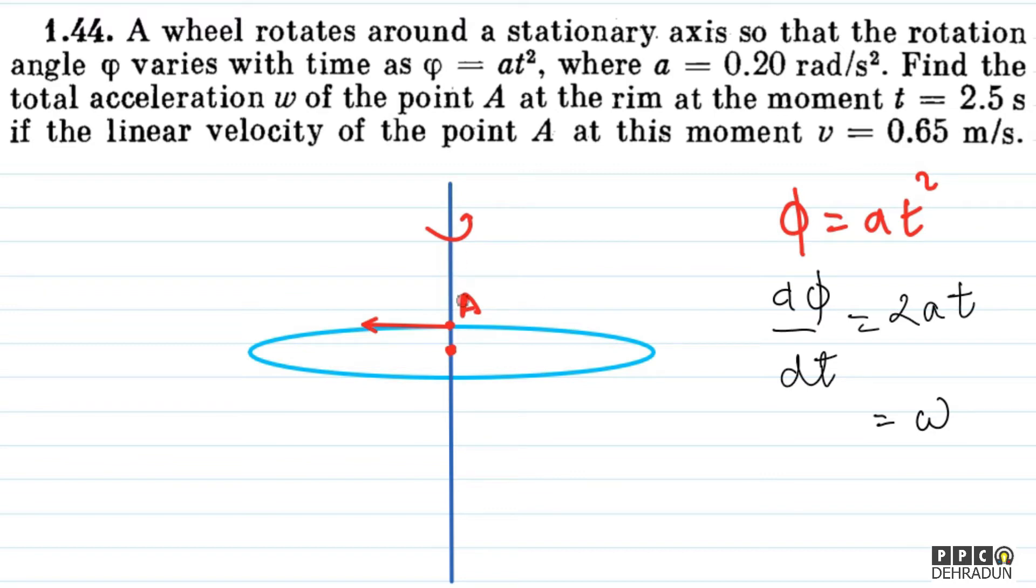One thing is clear: this particle is in circular motion, so it will have centripetal acceleration, which we can easily calculate. We're given the speed v, time t, and a. Using v equals r times omega, we can find r, which will be v upon omega.